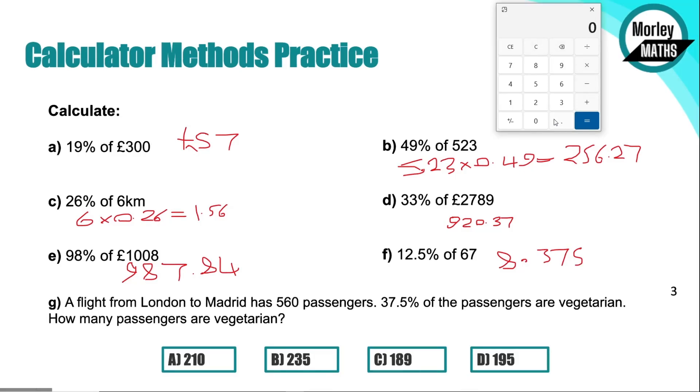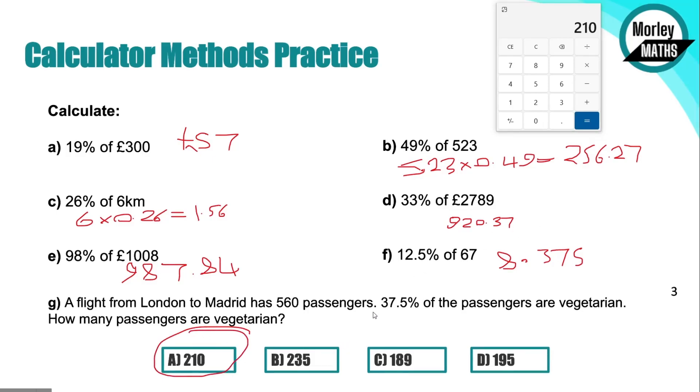Now we've got the final one at the bottom. A flight from London to Madrid has 560 passengers. 37.5% of those are vegetarian. How many passengers are vegetarian? You don't get many vegetarians nowadays, it's all veganism, which is absolutely fine. We'll times that by 0.375. So again, we're going to get rid of that decimal place that's within our percentage and move it to the front. So 0.375, and that gives us an answer of 210, which is A.